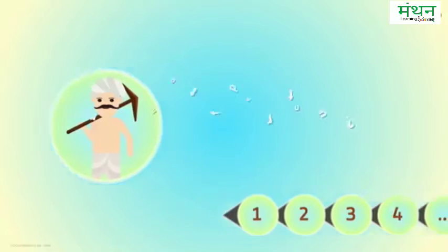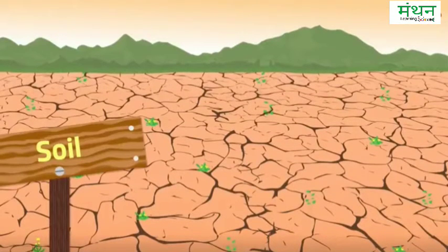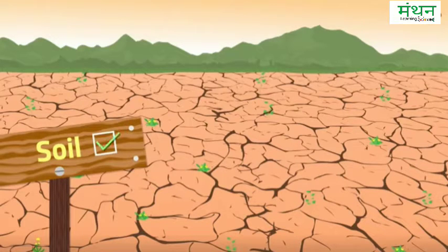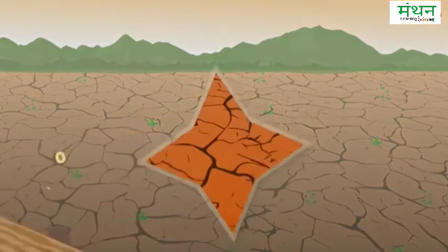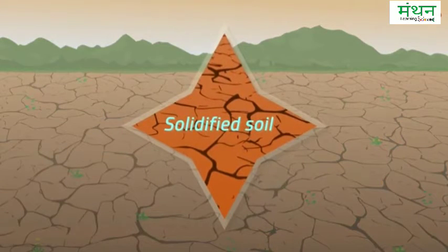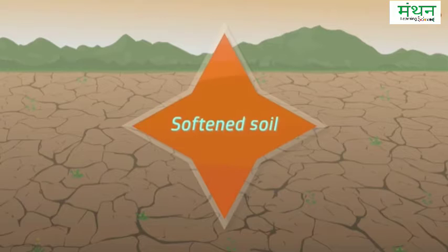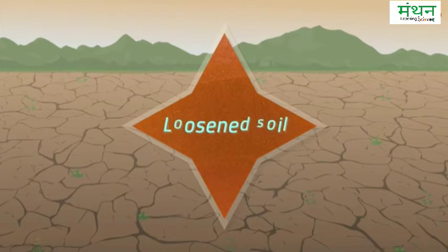What do you think is the most important requirement for agriculture? Soil — that's right. But do you know that soil needs to be prepared for crop production? Soil is usually found solidified into hard chunks of soil mass. This soil needs to be softened and loosened.